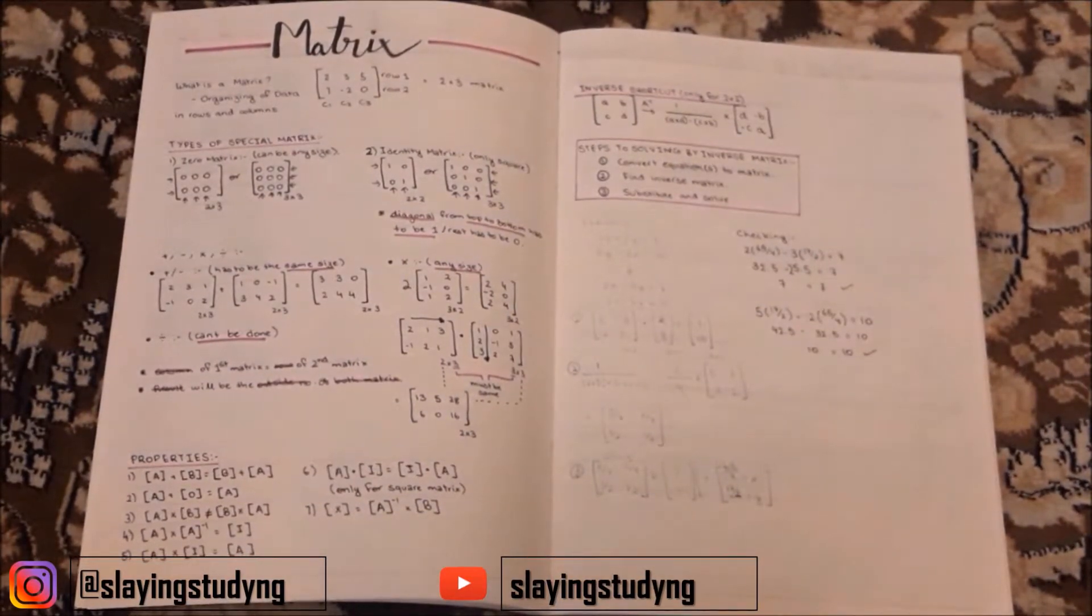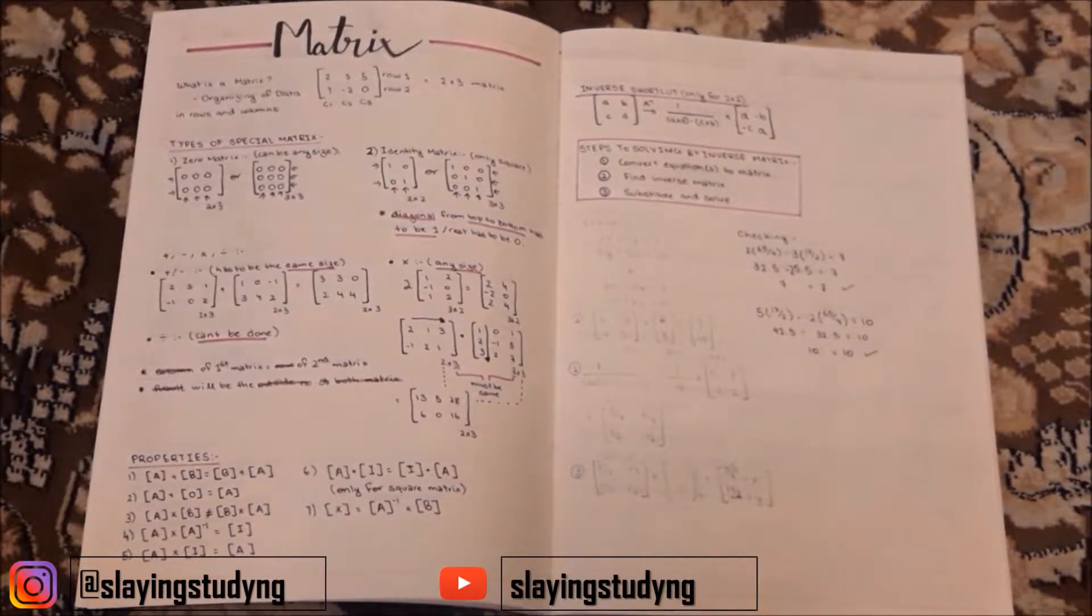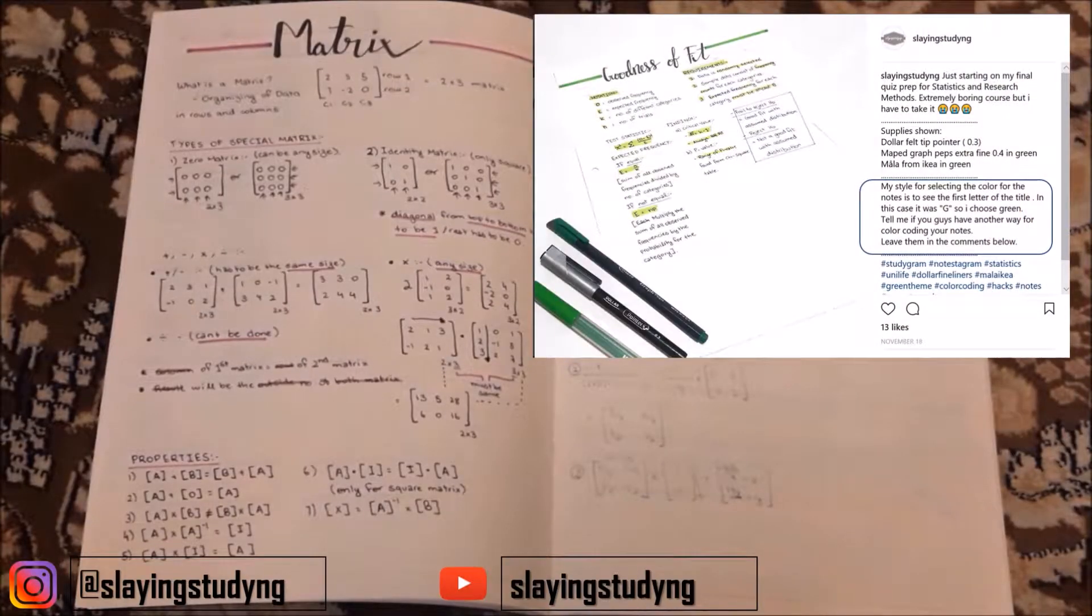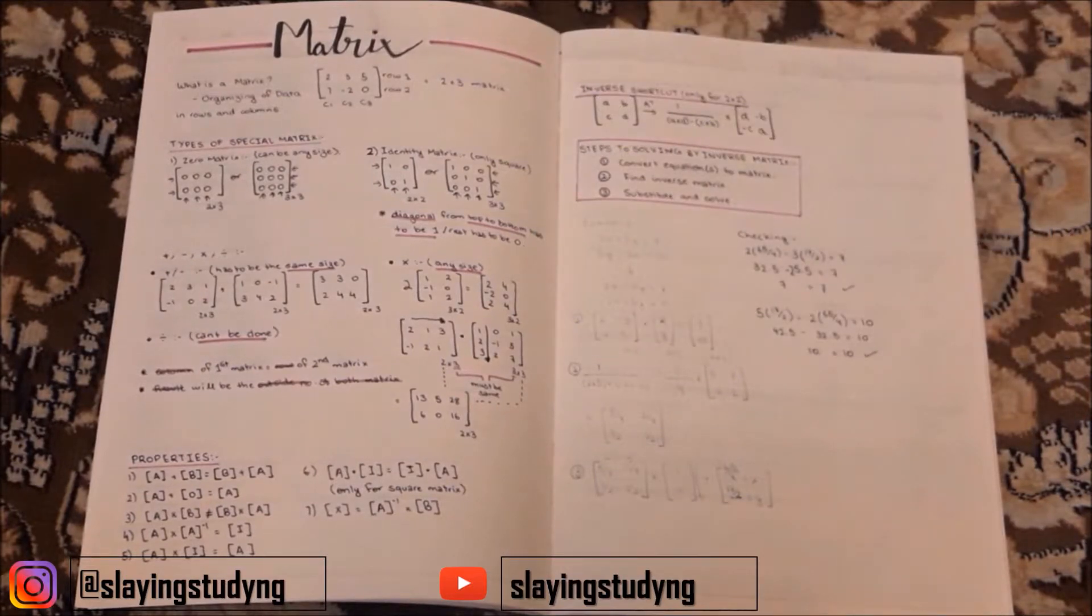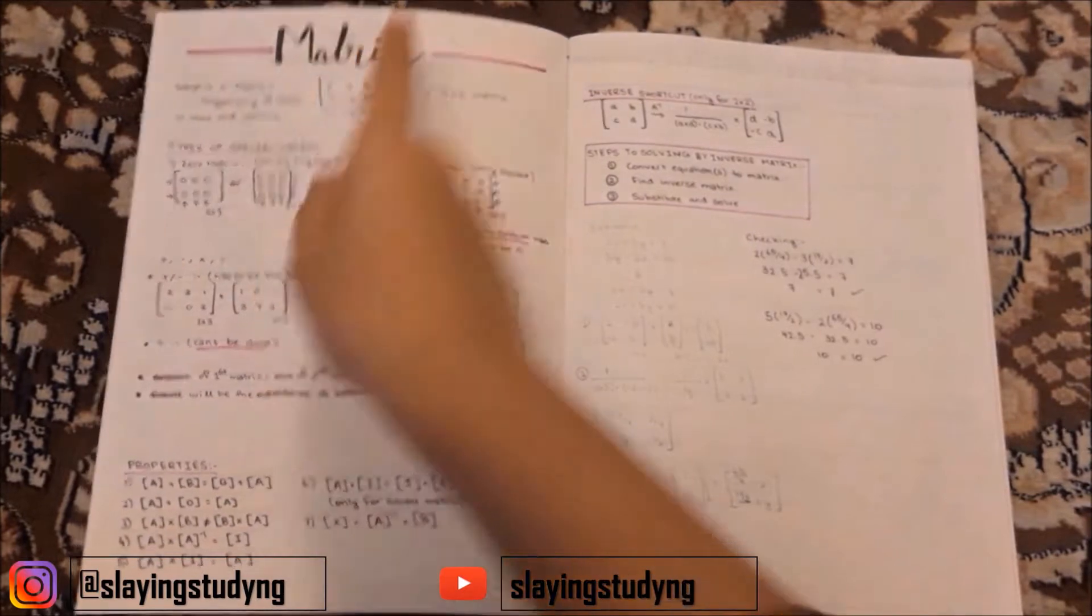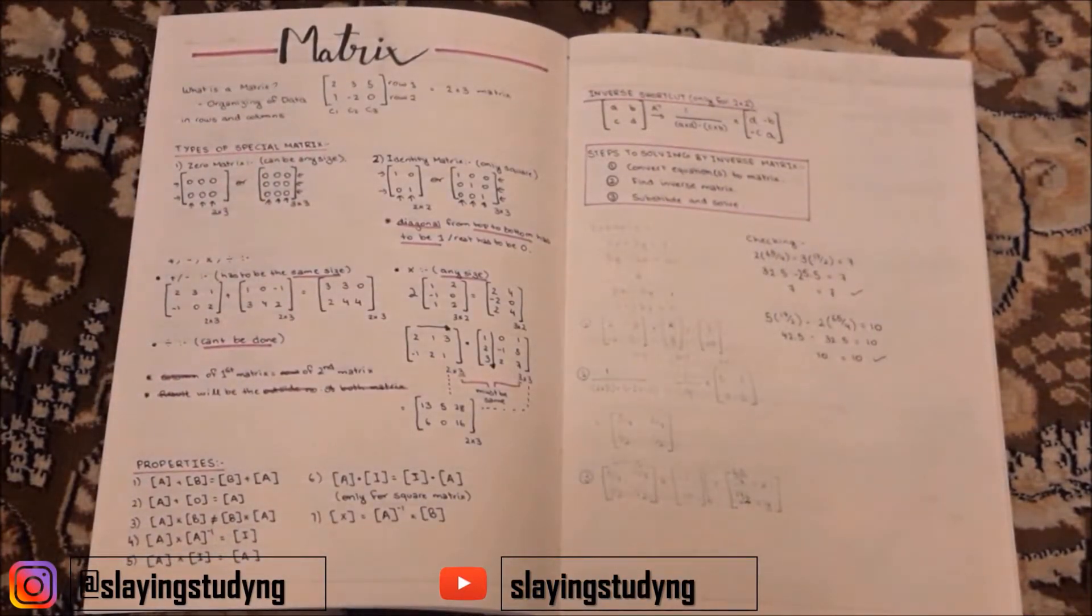Actually, this is magenta if I'm not wrong. As I said in my Instagram post, the way I themed my entire spread is that I see the first letter of the title, which is M, so the color that comes with the letter M is magenta. So I themed this entire spread around the color magenta.